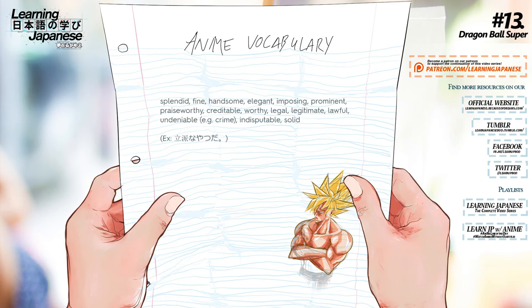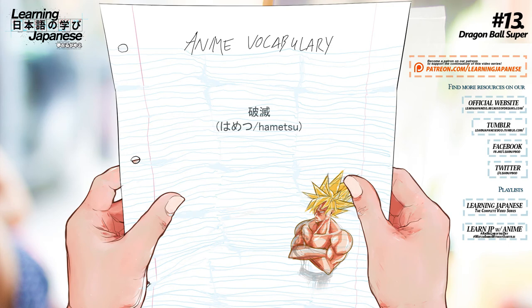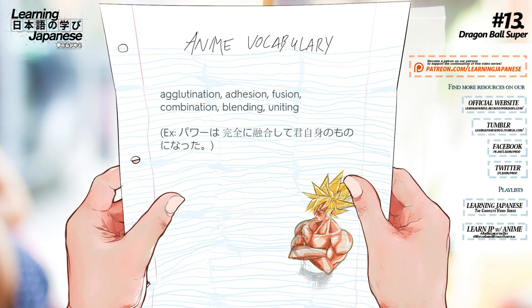破滅 — Ruin, destruction, fall. お土産 — Present, souvenir. 融合 — Agglutination, adhesion, fusion, combination, blending, uniting.